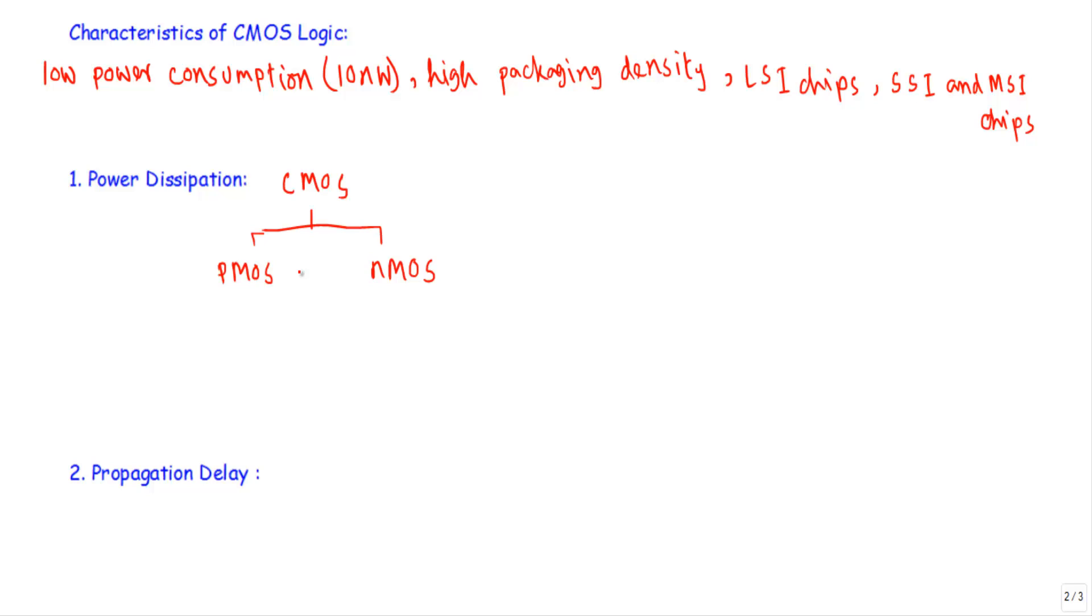For example, during the operation if PMOS transistor of the complementary pair of CMOS is in off state, its complementary pair NMOS will be in on state, or if NMOS is in off state its complementary PMOS will be in on state. In this condition, the power dissipation of a CMOS circuit is extremely small and it is in the order of 10 nanowatt. This dissipation is known as DC power dissipation.